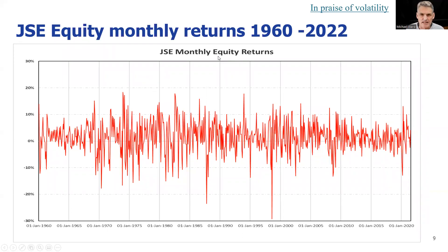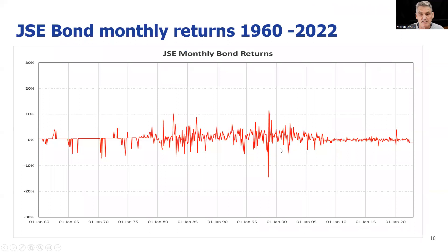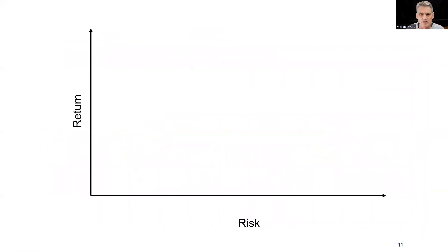If you looked at monthly returns on the JSE, they're going to be up and down all the time. If you invested in bonds, you can see it's much less risky. There's a clear relationship between risk and return.